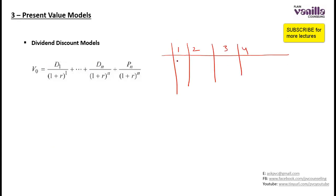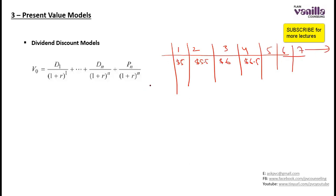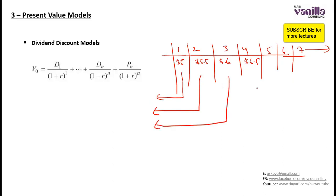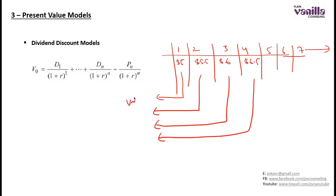So it paid a dividend in the first year of $5, in the second year $5.5, then it paid $6 and then $6.5, and so on — you expect it to continue to pay dividends forever. Now you are calculating value. Simply, you will calculate the present value of $5, then the present value of $5.5, then present value of $6, then present value of $6.5, and add them all up. When you add them up, that becomes the value.